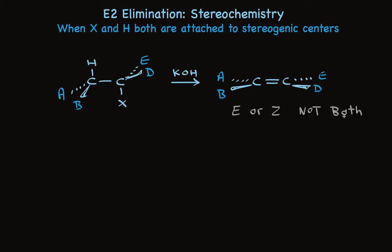Now whether it's E or Z simply depends on what A, B, E, and D are, and it doesn't matter for our discussion. The point is that we have one stereoisomer as a reactant, and it makes one stereoisomer for the product. This is a stereospecific reaction. The stereochemistry of the reactant dictates the stereochemistry of the product.